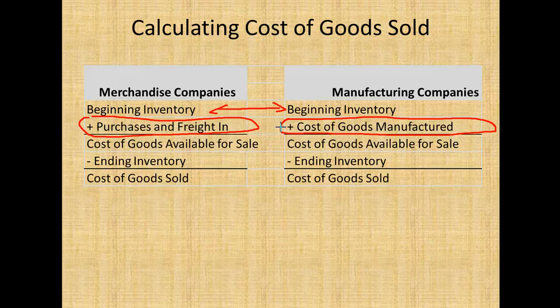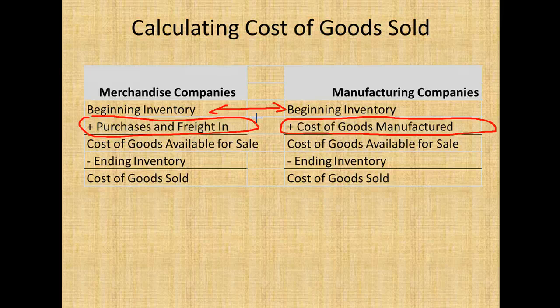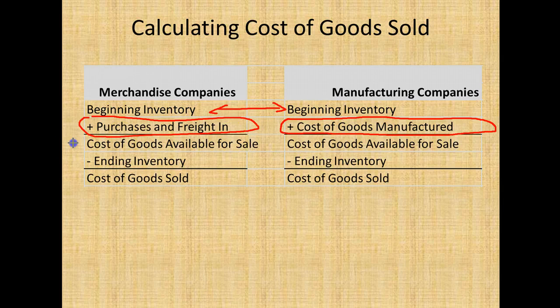So you take the beginning inventory — what I had at the beginning of the month — plus all the stuff I either made or purchased. And then what you have is this concept called cost available for sale. I had this, I bought this, so this is what I now have in my basket of things I have to sell.